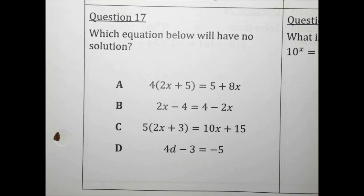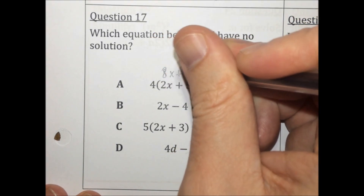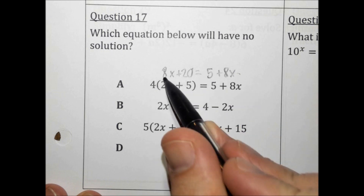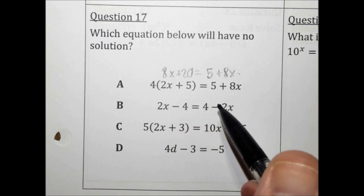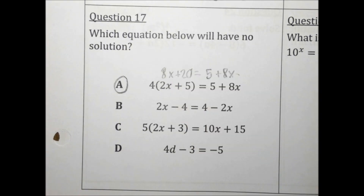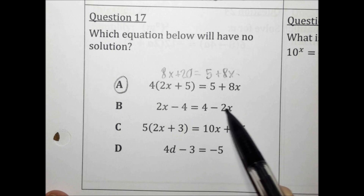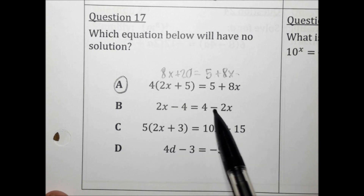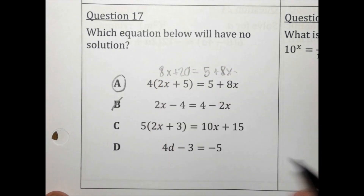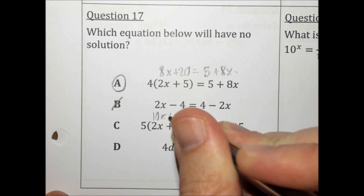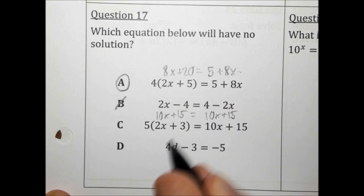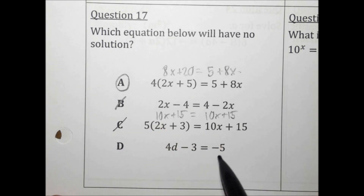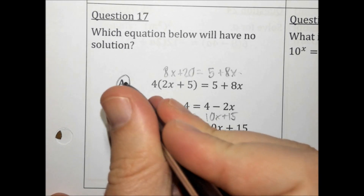Which equation below will have no solution? Let's simplify each equation. Choice A has 8x on both sides, which cancels out, and then we have 20 equals 5, which is not true — so this will probably be the answer. Choice B has positive 2x and negative 2x, which are different, so this one actually has a solution. Choice C simplifies to 10x plus 15 equals 10x plus 15, giving infinite solutions. Choice D has a variable on only one side and is solvable. So the answer is choice A.